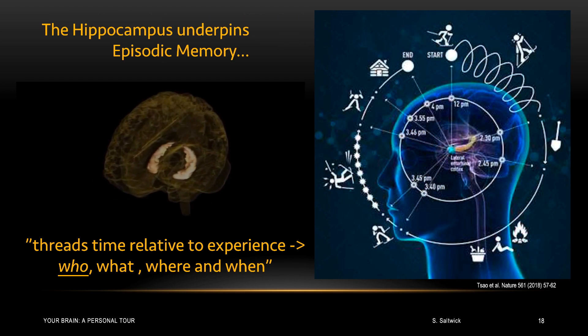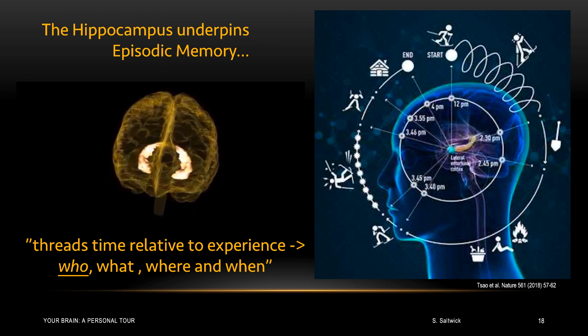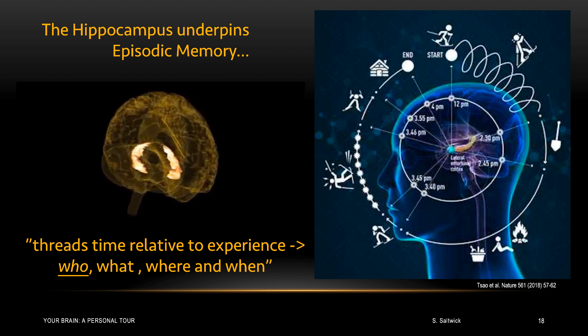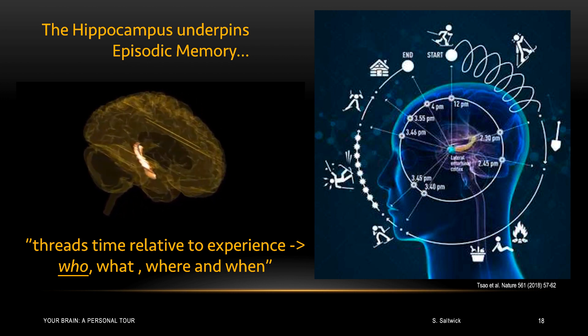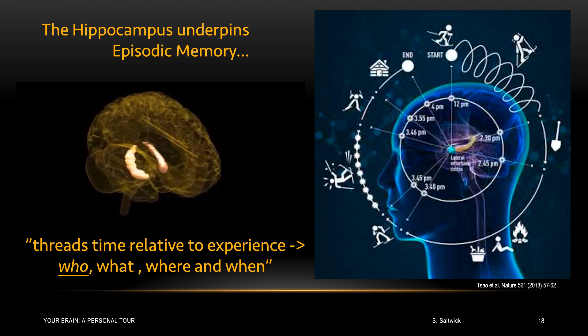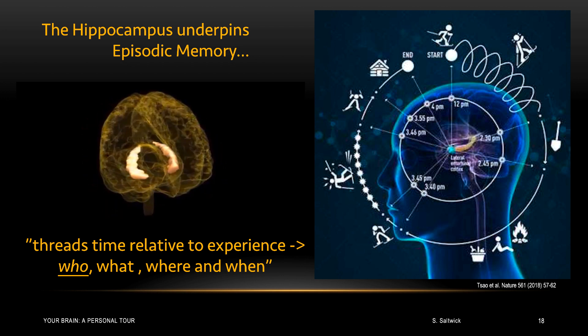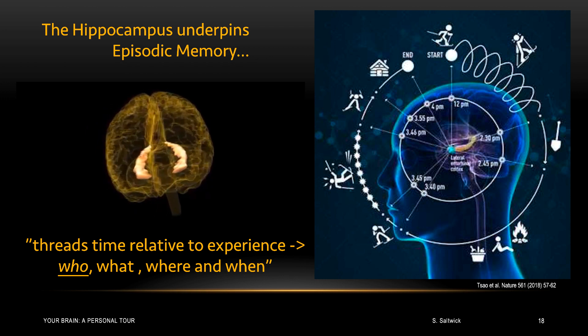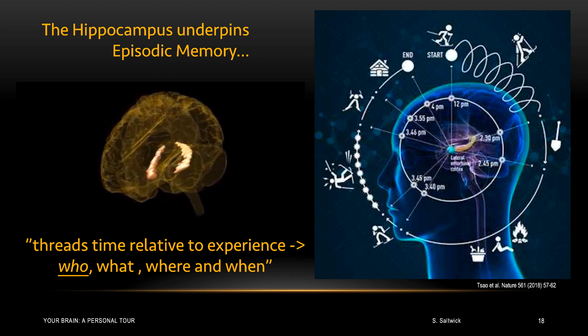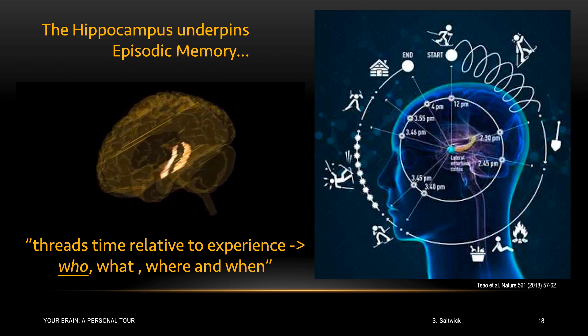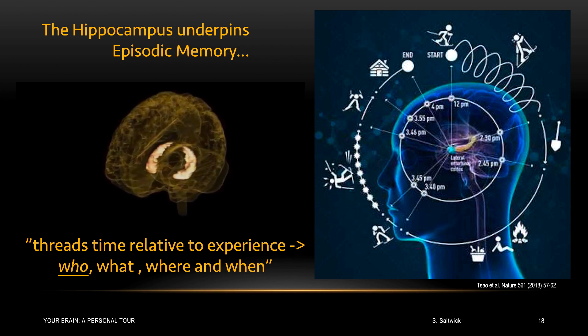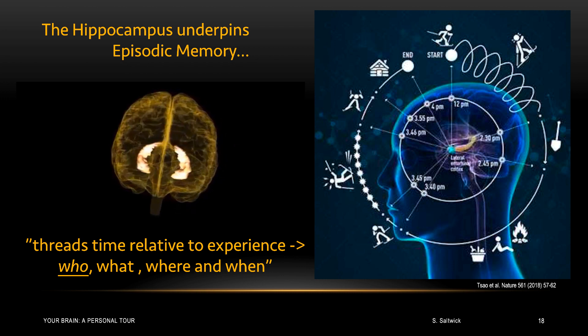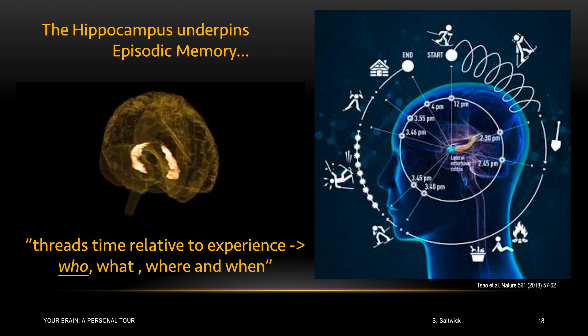Now, episodic memory is not a YouTube video of the events of the day. The hippocampus seems to thread time and space into a personal fabric of experience involving you at the center, and then the what, where, when aspects fused into your experience in a unique way. While machines are used to measure linear time, see the clock in the middle of the diagram on the right, our brain experiences time as an ordering of events.